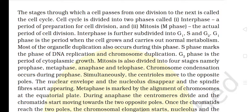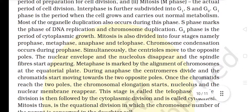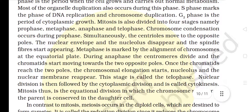Interphase is further subdivided into G1, S, and G2. G1 phase is the period when the cell grows and carries out normal metabolism; most organelle duplication also occurs during this phase. S phase marks the phase of DNA replication and chromosome duplication. G2 phase is the period of cytoplasmic growth. Mitosis is also divided into four stages: prophase, metaphase, anaphase, and telophase.